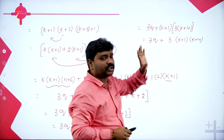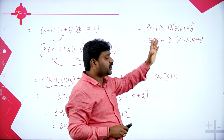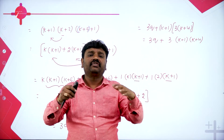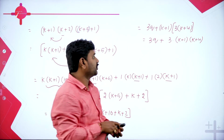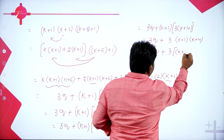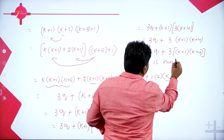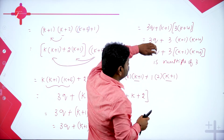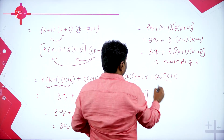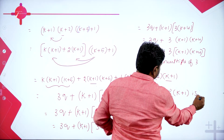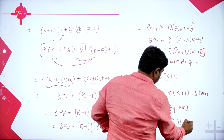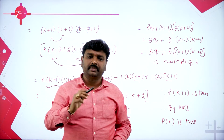Now observe: 3k and 12 are both multiples of 3. From these two I can take 3 common, giving k+4. So now: 3q plus 3(k+1)(k+4). This is a multiple of 3, and 3 times some number is also a multiple of 3. Multiple of 3 plus multiple of 3 is a multiple of 3 — for example, 6 and 9: 6+9=15, also a multiple of 3. So 3q + 3(k+1)(k+4) is clearly a multiple of 3. Therefore P(k+1) is true. Therefore by PMI, the given statement P(n) is true for all n in natural numbers.